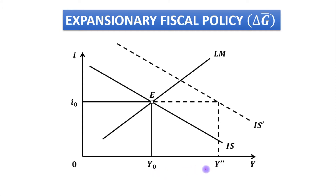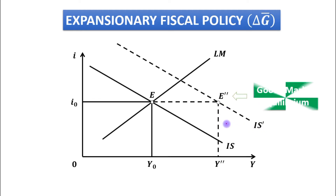This point will be named as E double-dash. You can notice that this point lies on the IS schedule, so at this point there will be goods market equilibrium.